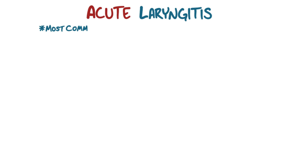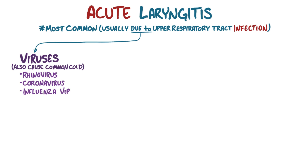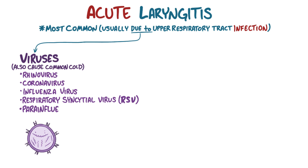Acute laryngitis is most common, and it's usually due to an upper respiratory tract infection, most often due to a virus. These viruses are the same ones that cause a common cold, like rhinovirus, coronavirus, influenza virus, respiratory syncytial virus or RSV for short, and parainfluenza virus.